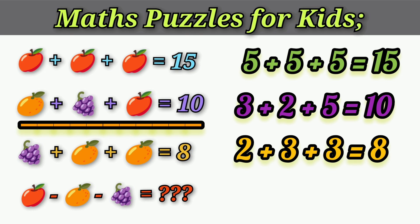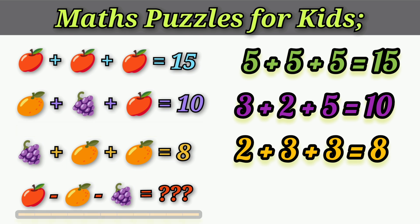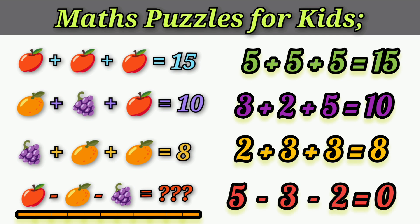Checking second equation: orange equals 3, grapes equals 2, apple equals 5 — so 3 plus 2 plus 5 equals 10. Confirmed. So: one apple is 5 rupees, one orange is 3 rupees, one grapes is 2 rupees. Now solve the last equation: apple minus orange minus grapes.